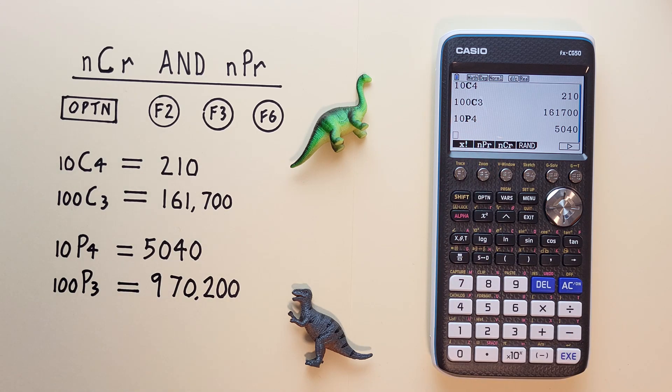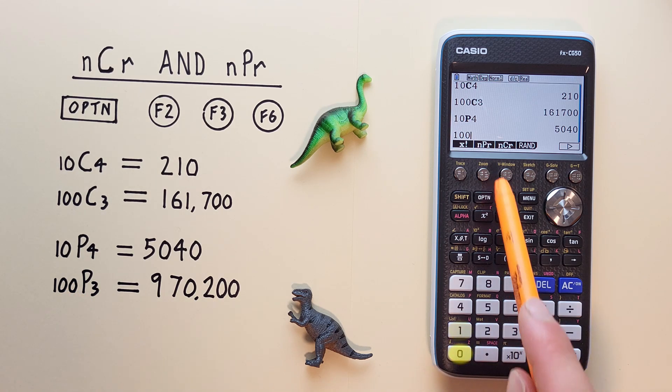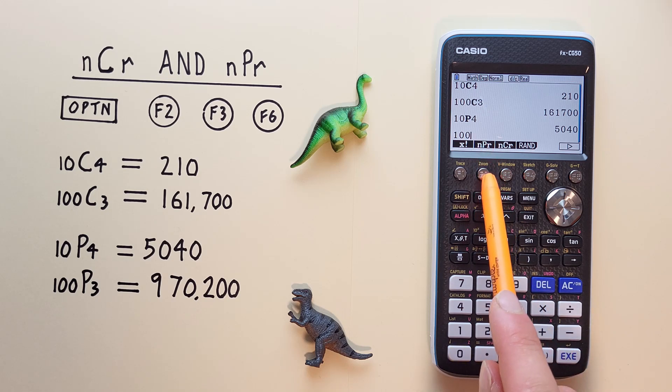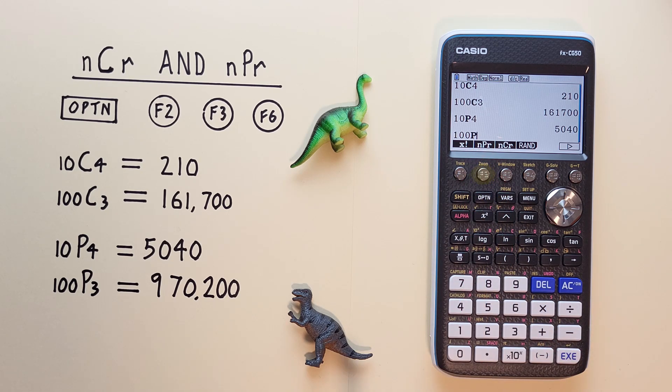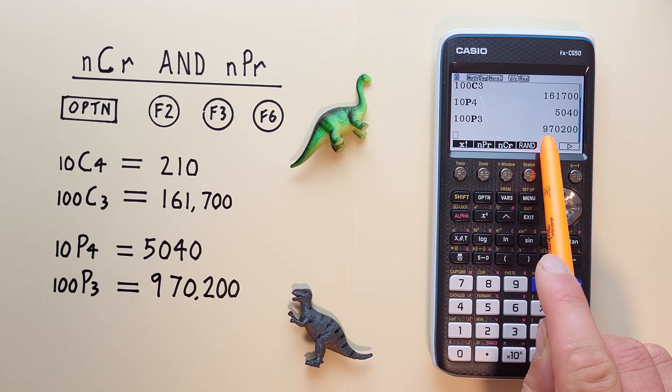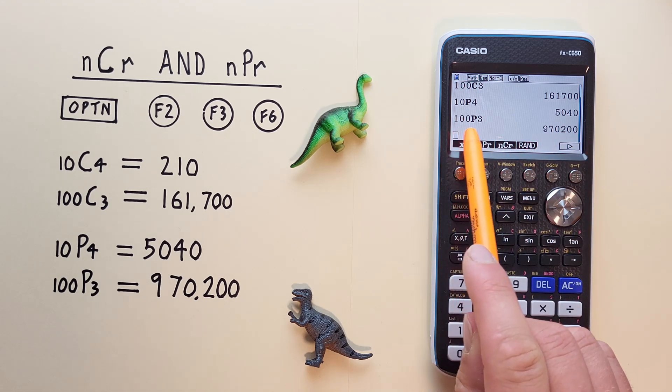One more example. Again, let's say 100 choose 3 permutations. So we start with the 100, choose the nPr or F2 here, and then the 3, and hit EXE or execute. And we see we get 970,200 possible permutations.